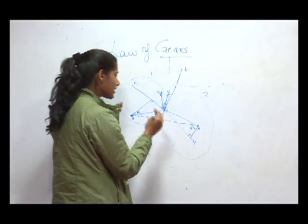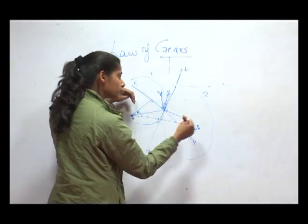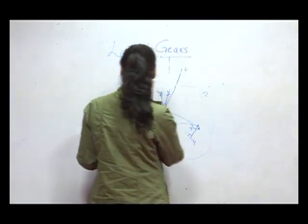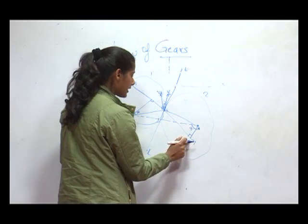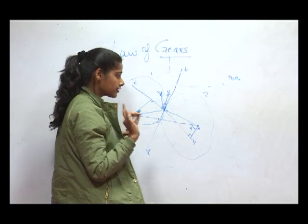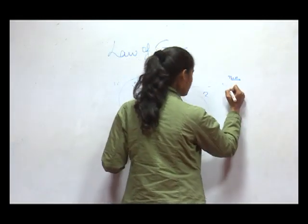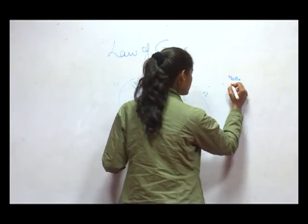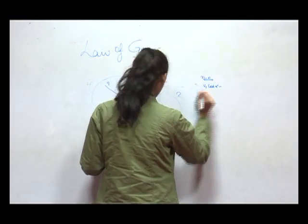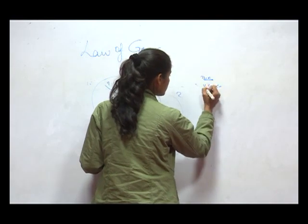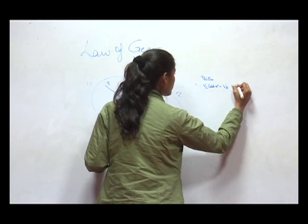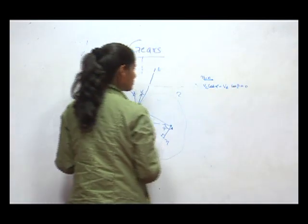If there is linear motion, what will happen? One gear will go into the other and our motion will not be able to get out of it. So, let's see that along the line of nn, the velocity should be zero. So, the velocity equation becomes: V1·cosα minus Vd·cosβ equals zero.